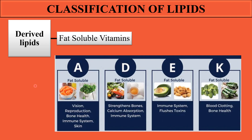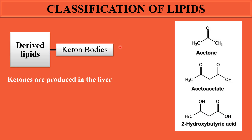Another derivative is fat-soluble vitamins, which require the presence of lipids for their absorption. The fat-soluble vitamins are A, D, E, and K. Vitamin A is involved in vision, reproduction, bone health, immune system function, and skin development. Vitamin D is involved in strengthening bones, calcium absorption, and boosting the immune system. Vitamin E boosts the immune system and aids in toxin removal. Vitamin K is involved in blood clotting and bone health.